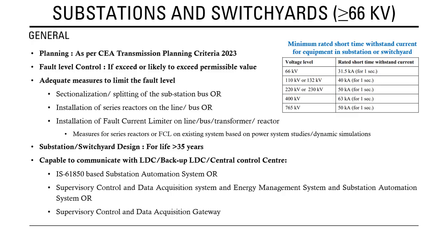The standard states that substation planning should be done as per the CEA Transmission Planning Criteria 2023. The earlier planning criteria being utilized was the CEA Transmission Planning Criteria 2013, and the revised one was published in March 2023. A separate video presentation on this new transmission planning criteria is available to understand the changes incorporated in 2023 versus the earlier 2013 criteria.